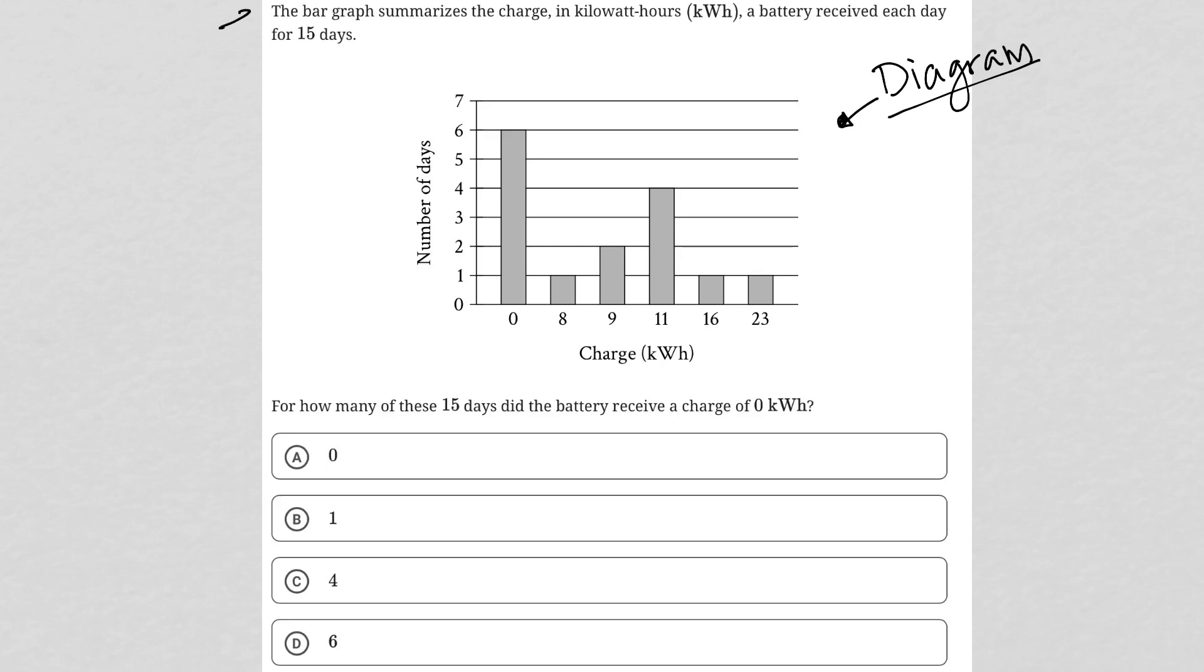The question says the bar graph summarizes the charge in kilowatt hours a battery received each day for 15 days.